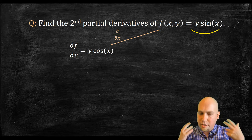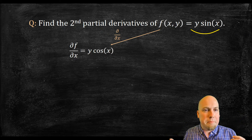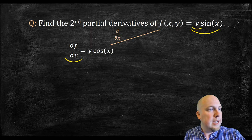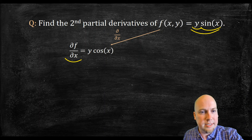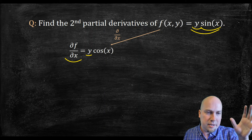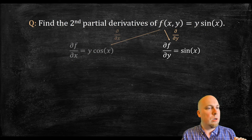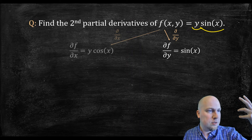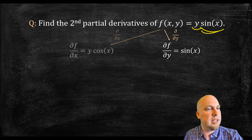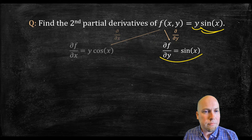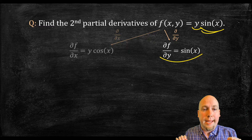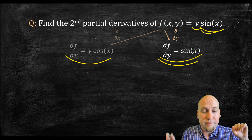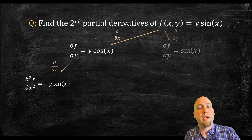Let's go through an example: finding the second partial derivatives of f(x, y) = y times sine of x. Before finding the second partials you've got to find the first partials. The x partial: keep y constant and take the derivative of sin x, which gives y cos x. The y partial: sin x is a constant since x is constant, so the derivative of y times that constant is just sin x. Those are our two first partial derivatives.